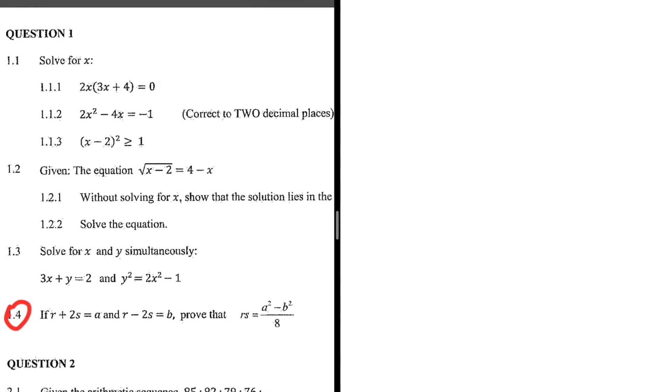But let's take a look at the case we have. We have r plus 2s equals a, and r minus 2s equals b, and it's supposed to prove that r multiplied by s equals a squared minus b squared divided by 8.